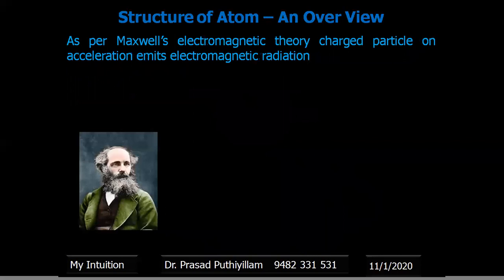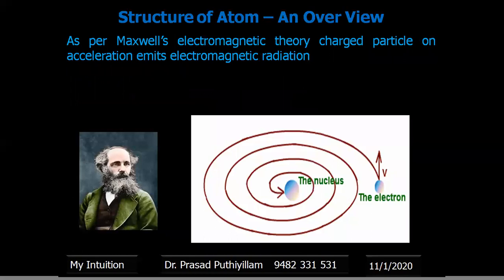As per Maxwell's electromagnetic theory, charged particles under acceleration emit electromagnetic radiation. If an electron moves in a circular path, it changes direction, which constitutes acceleration. Therefore, an accelerating charged particle would emit electromagnetic radiation, causing the electron to spiral inward and combine with the nucleus. Theoretical calculations suggest this collapse would take no more than 10 to the power of minus 8 seconds.